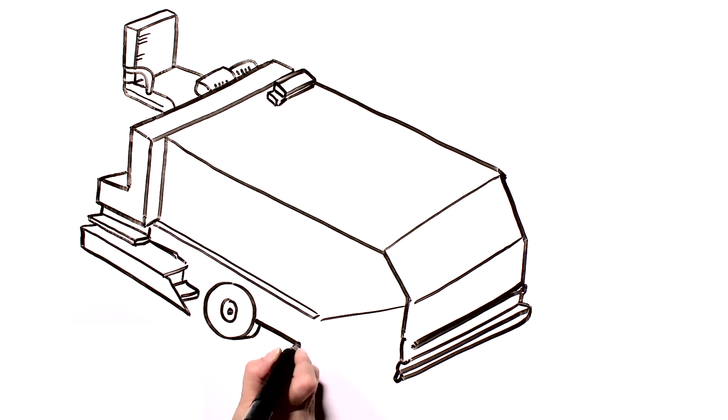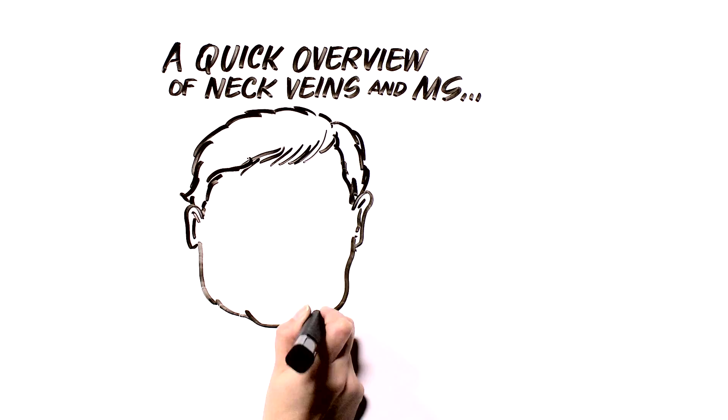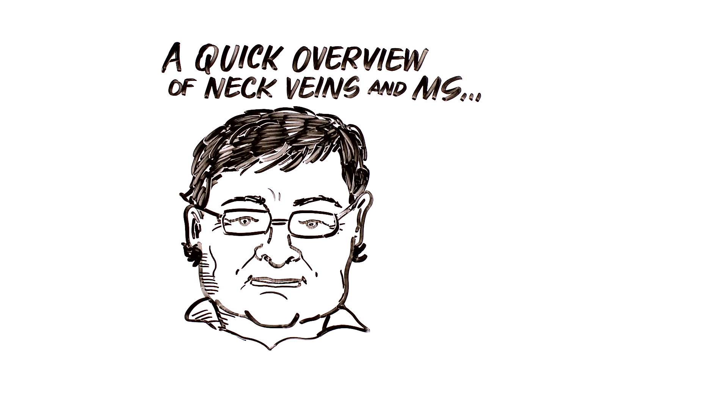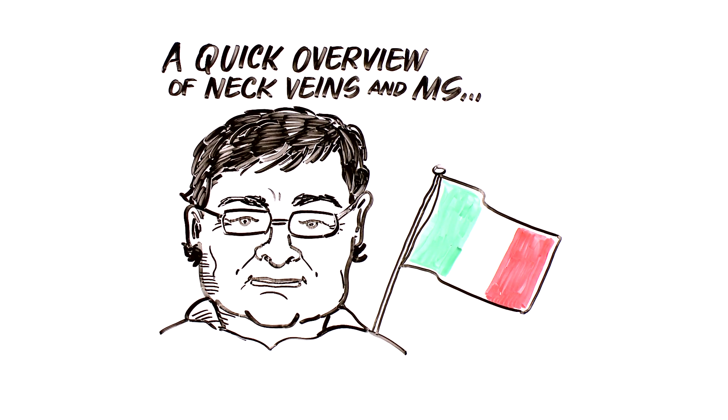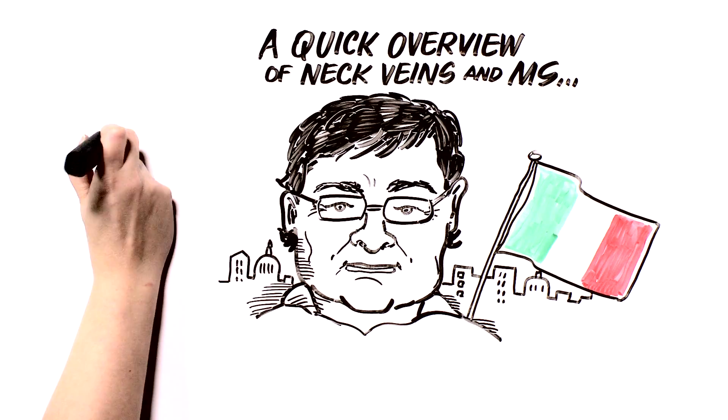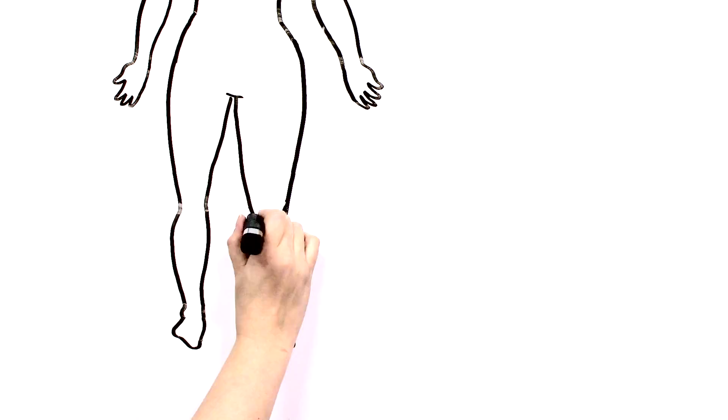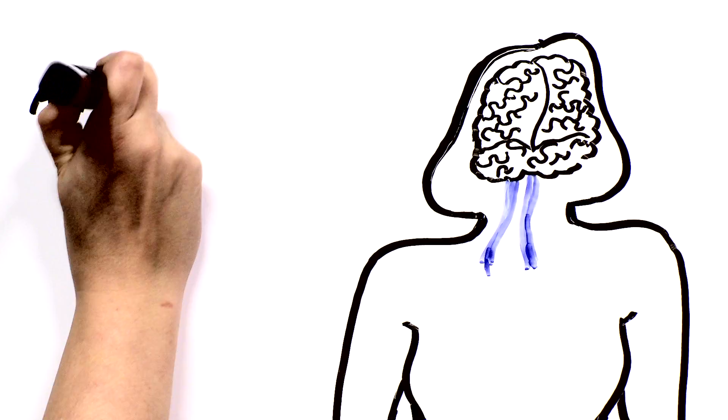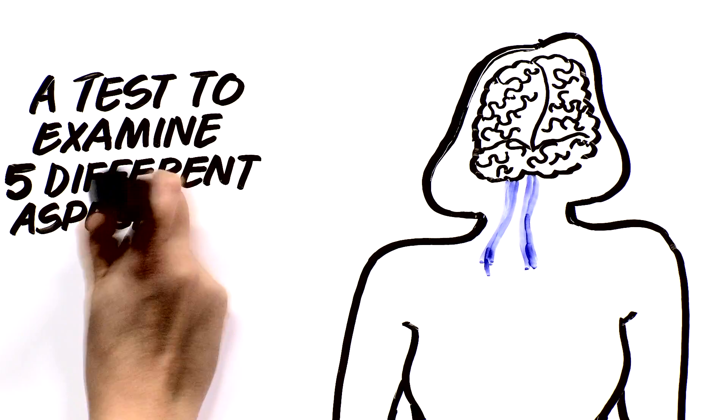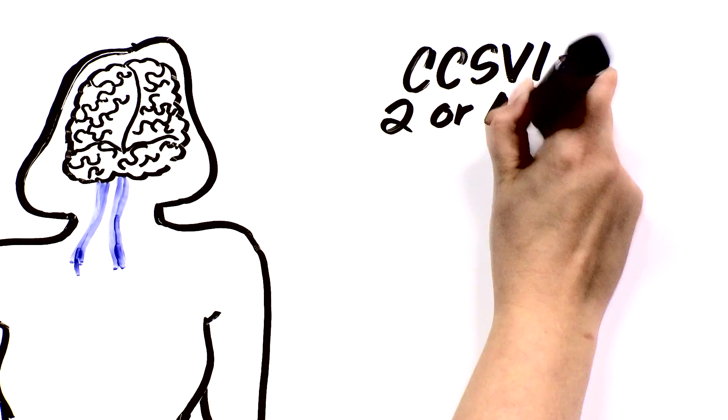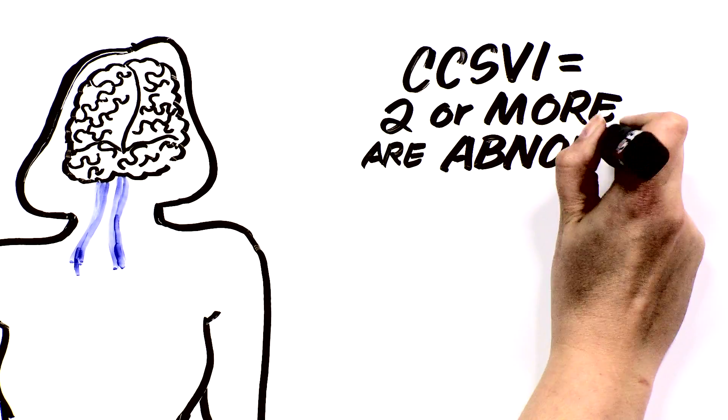About three years ago, Dr. Paolo Zamboni, a physician from Italy whose wife has MS, suggested that all people with multiple sclerosis had abnormalities of the veins draining the brain and spinal cord and that these abnormalities were not present in any people who did not have MS. He called these abnormalities CCSVI, which is diagnosed with an ultrasound test. Dr. Zamboni used this method to examine five different aspects of blood flow and anatomy of the veins. As defined by Dr. Zamboni, a diagnosis of CCSVI is made if two or more of these five items are abnormal.